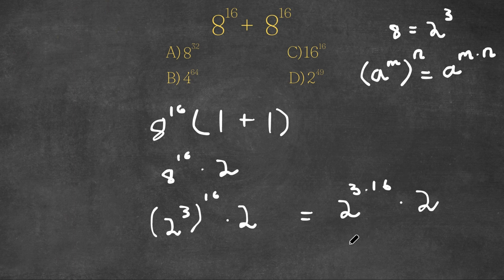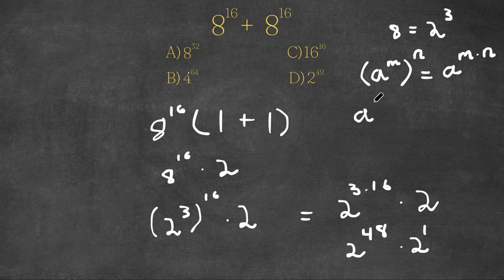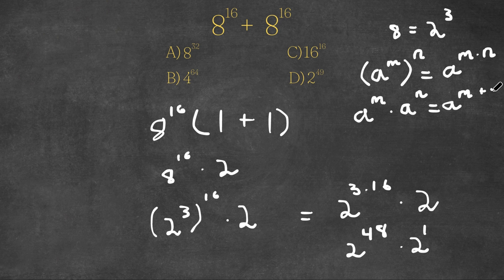Now 3 times 16 is 48. So now we have 2 to the power of 48 times 2. And now 2 is the same thing as 2 to the power of 1. And when we're multiplying exponents and we have something in the form a to the power of m times a to the power of n, this is equal to a to the power of m plus n. So 2 to the power of 48 times 2 to the power of 1 equals 2 to the power of 48 plus 1, which is 2 to the power of 49.